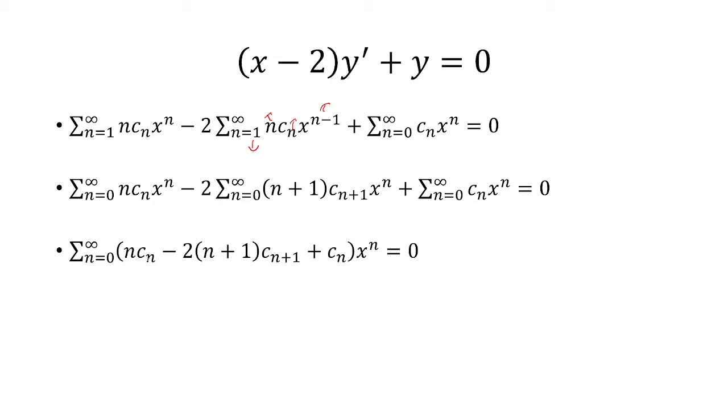So I can bring this all under one sum and factor out x to the n. So it's n times c sub n for the first one, minus 2 times n plus 1 times c sub n plus 1 for the second, and then for the last one we just have c sub n.